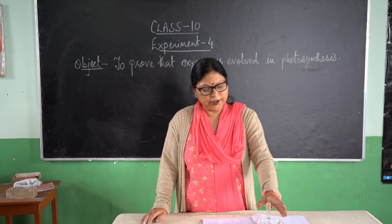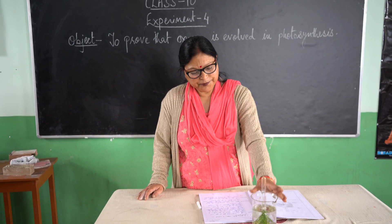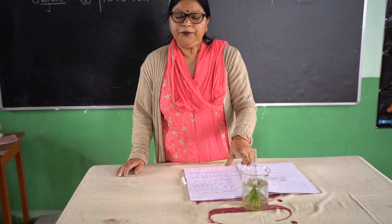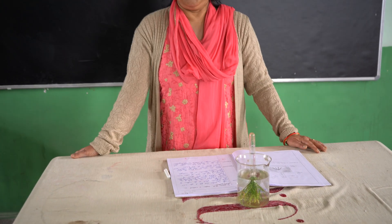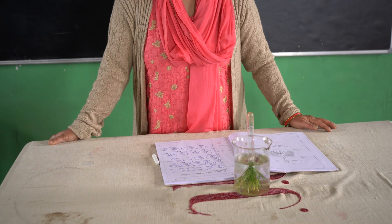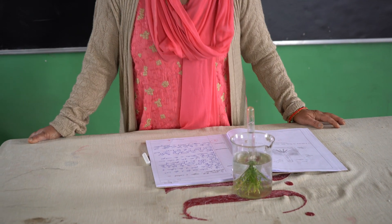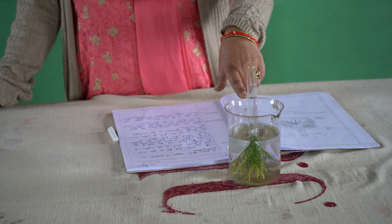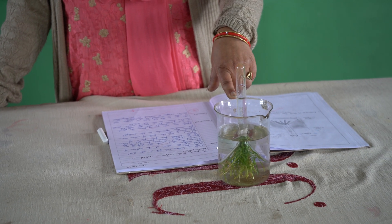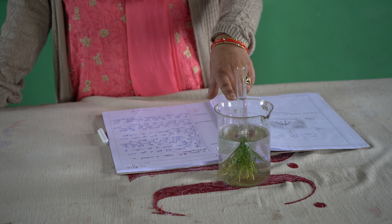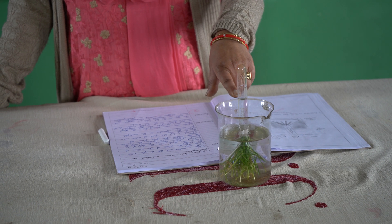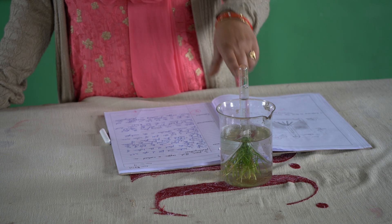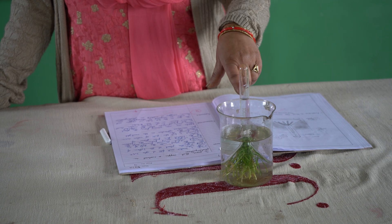For this experiment, we have taken a beaker filled with water. We have used an aquatic plant, that is Hydrilla. This Hydrilla is kept inside and covered by a short-stemmed funnel, and then a test tube filled with water is inverted and placed on top of the funnel.